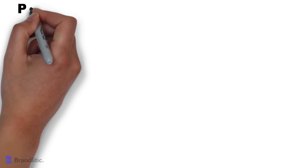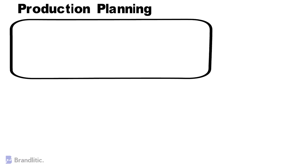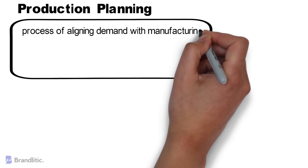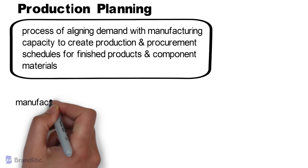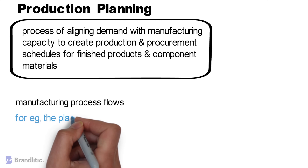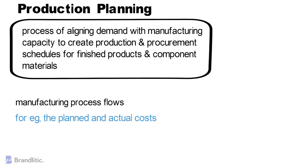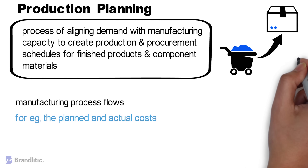First off, what is Production Planning? Production Planning is the process of aligning demand with manufacturing capacity to create production and procurement schedules for finished products and component materials. In this cycle, SAP PP acts as an important module as it tracks and makes records of manufacturing process flows, for example, the planned and actual cost, and also during the goods movement from the conversion of raw materials to semi-finished goods.